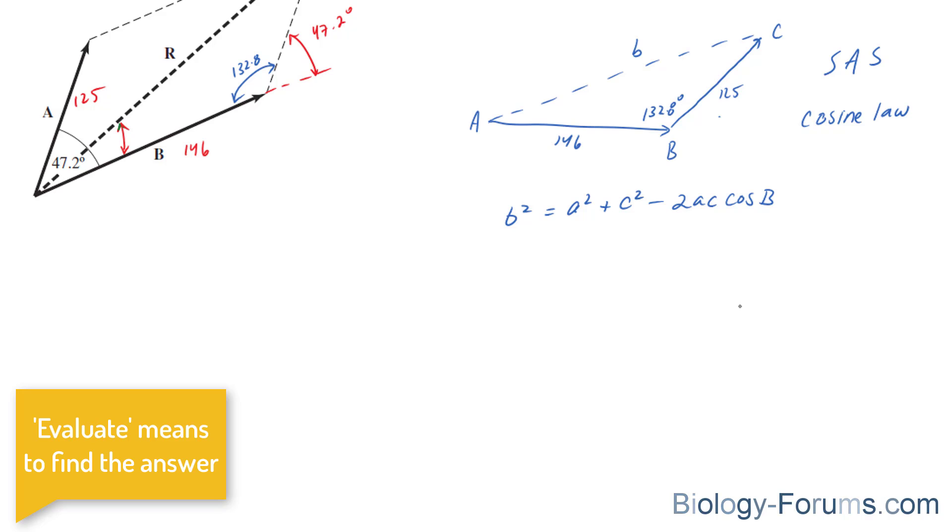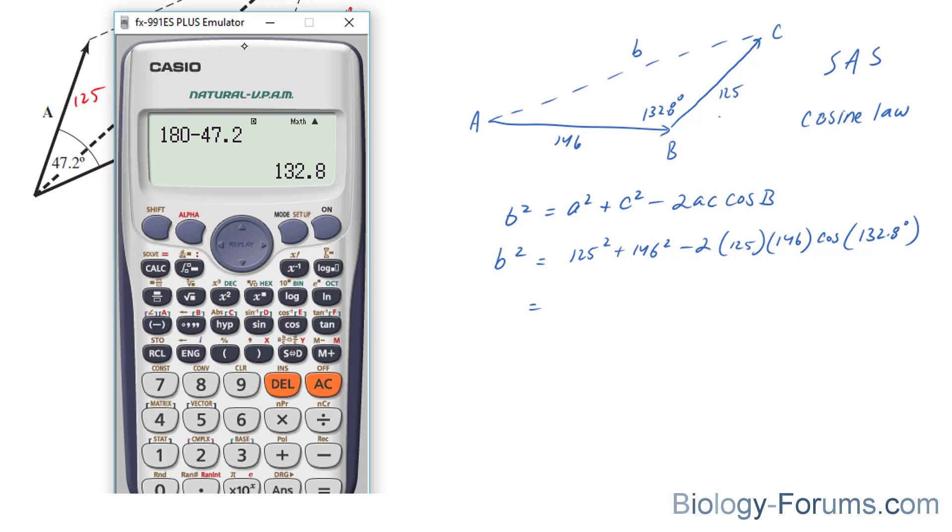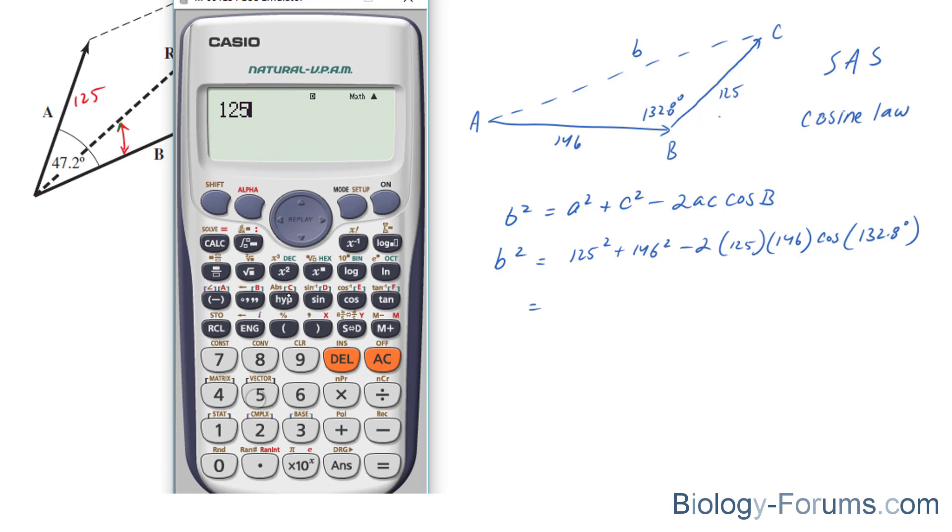So, let's figure this out. Let's plug in everything we know. We don't know this long side, so I'm just going to keep that the way it is. We do know little a, we do know little c, 2 times a, which is 125 times 146. Cosine big B is 132.8 degrees. And we're going to plug this into our calculator and see what we get. 125 squared plus 146 squared minus 2 times 125, 146. Cosine 132.8.